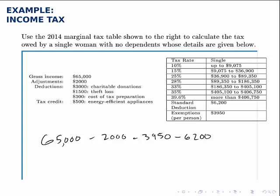You always check whether the itemized deductions give a better deal than the standard deduction and subtract whichever one is higher. So, we've taken the gross income, subtracted off the adjustments, exemptions, and deductions, and we've found that the taxable income is $52,850. Now that's the number we'll start with, and we'll split this into the brackets.